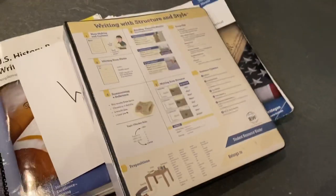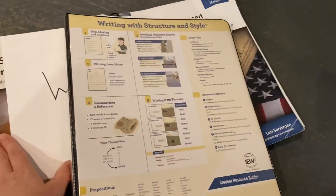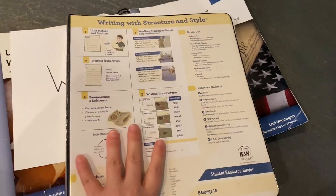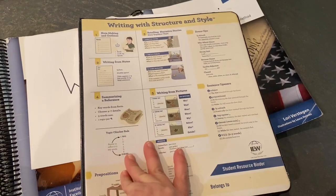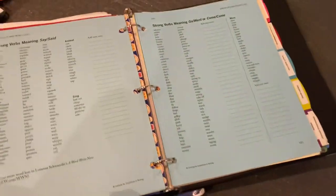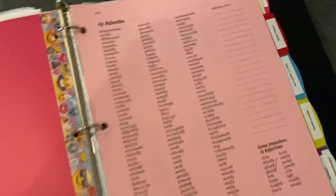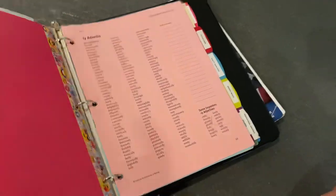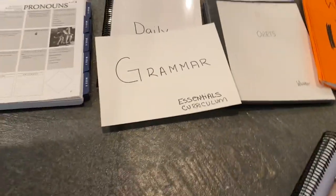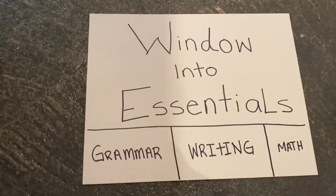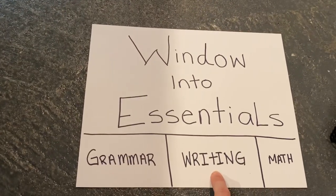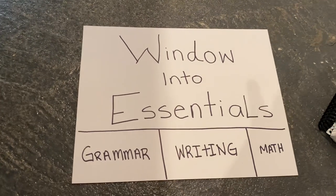There's one extra resource called the Student Resource Binder. I purchased mine from IEW directly — there may also be a download you can print and put in your own binder, but this was already done for me and inexpensive. It's exactly what it says: an extra resource so that if students are writing and hit a wall and can't think of a great adverb, they can open this up and find a list of vocabulary words to use. So that's your window into Essentials — a full grammar and writing curriculum with a little math for reinforcement. I hope that's helpful to you.